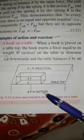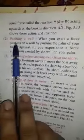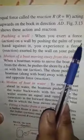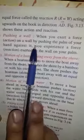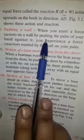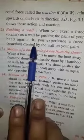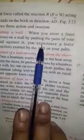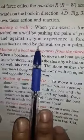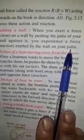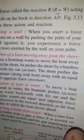This action and reaction is called Newton's third law of motion. Another example: suppose when you are pushing a wall, you exert a force — that is the force of action on the wall — by pushing the palm of your hand against it. You will also experience a force, that is the force of reaction exerted by the wall on your palm. So that is Newton's third law of motion.